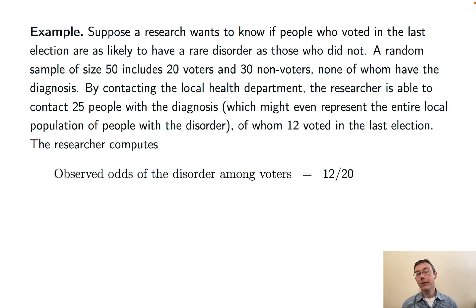First, the observed odds of disorder, of having the disorder for voters. So we have 12 people with the disorder total and 20 people without.